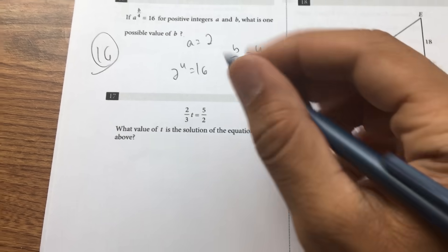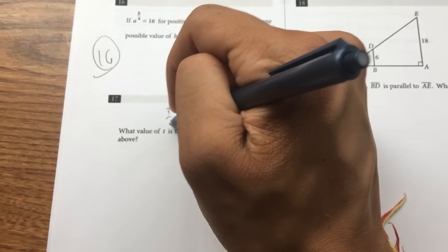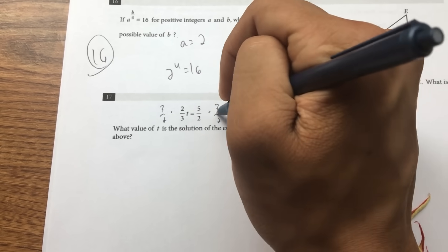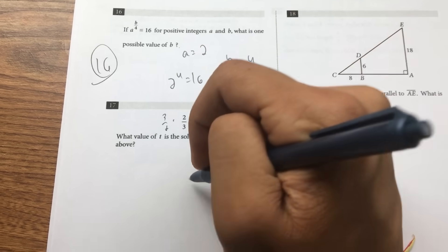What value of t multiplied by the reciprocal is equal to 15 over 4?